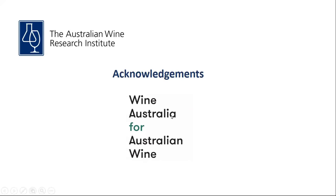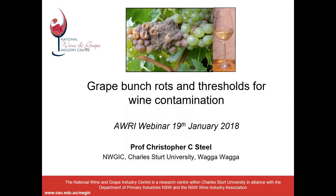The topic for today's session is Grape Bunch Rots and Thresholds for Wine Contamination. I'll hand over now to Dr Chris Steele to start the conversation. Today I'm going to be talking about grape bunch rots and thresholds for wine contamination. Right at the outset, I'm going to concentrate on grey mould of grapes caused by Botrytis cinerea, and only briefly mention some of the other rots.